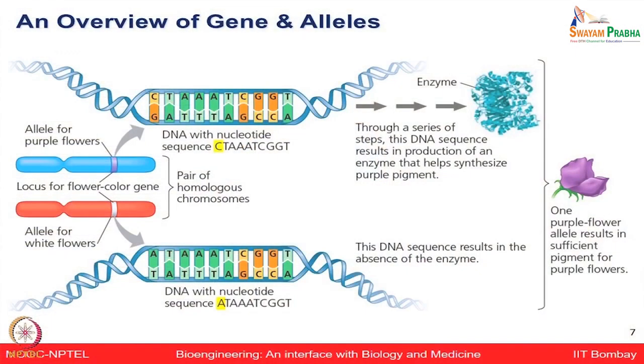Just one base pair change can result in a lot of misregulation and deformities. Many times in cancer patients, many mutations happen — sometimes a base pair shifts, and the entire protein coding sequence can be changed. Because of that one base pair change, this allele makes the enzyme required to give purple color, whereas the other has a deficiency and cannot make enzyme for purple color, showing only the white pattern.